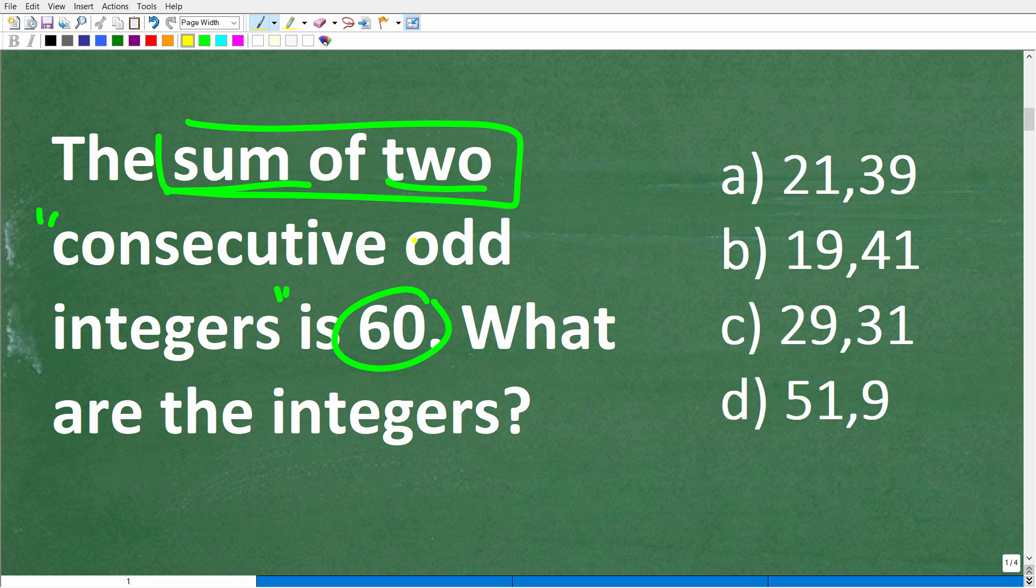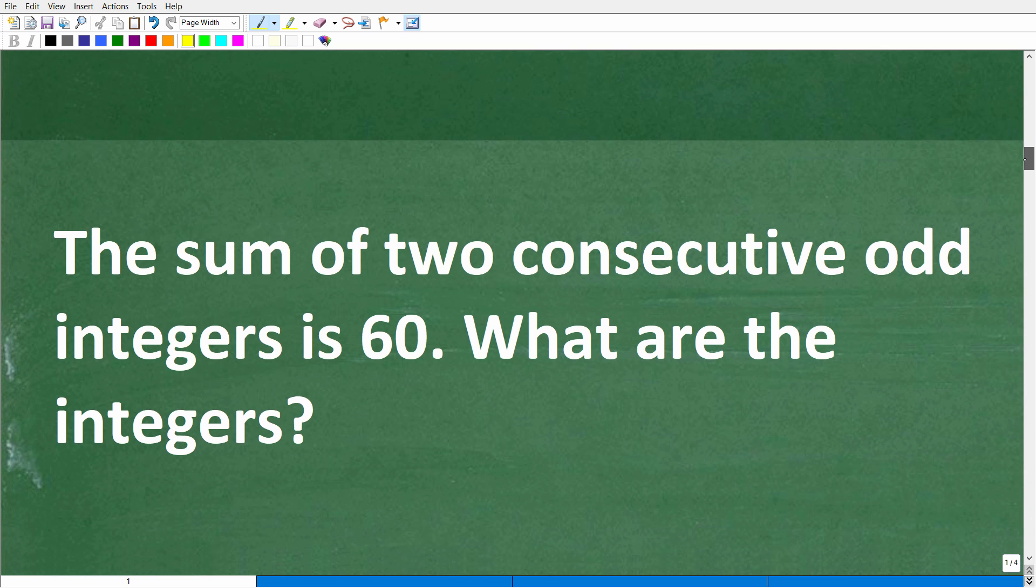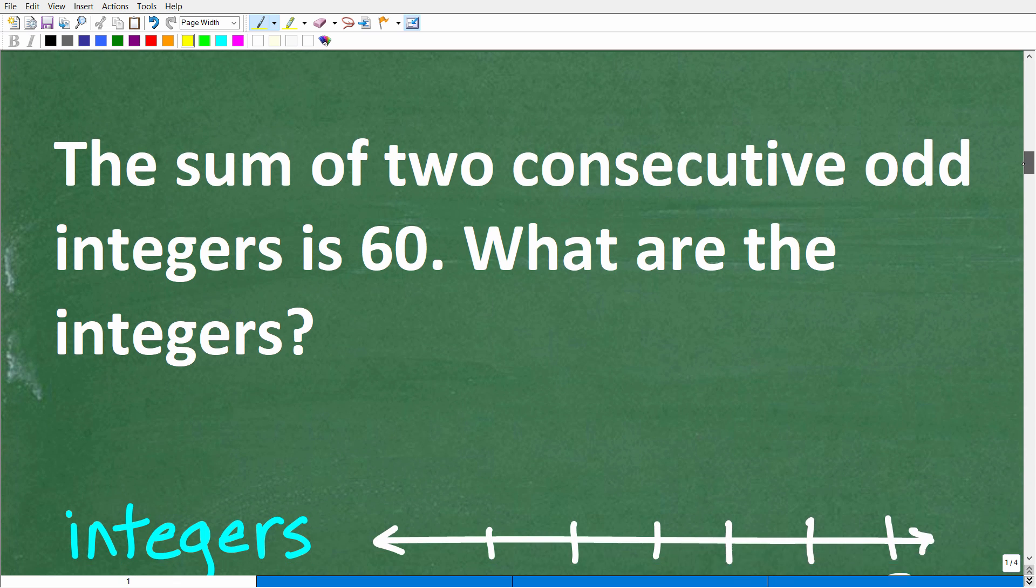But here you have the sum of something is 60. So maybe you're like, well, I don't know, 51 and 9, that's 60. That looks pretty good to me. And that is a fantastic guess. Unfortunately, it's wrong, right? So the only way to get the right answer is to know the math, which means in this case, we need to understand the vocabulary first. All right, so let's get into this right now and talk about what these words mean, consecutive odd integers.